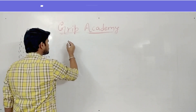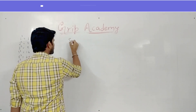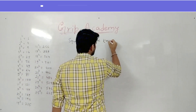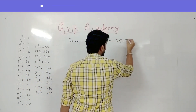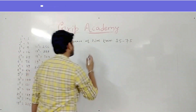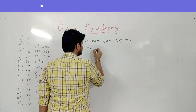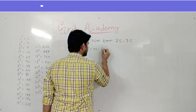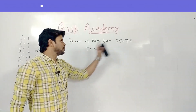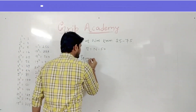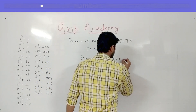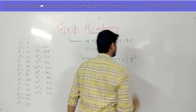First we'll find the square of numbers between 25 to 75. There is one small formula: base equals n minus 50, where n is the number for which we are going to find the square. The square of n will be given by 25 plus base, slash base squared.